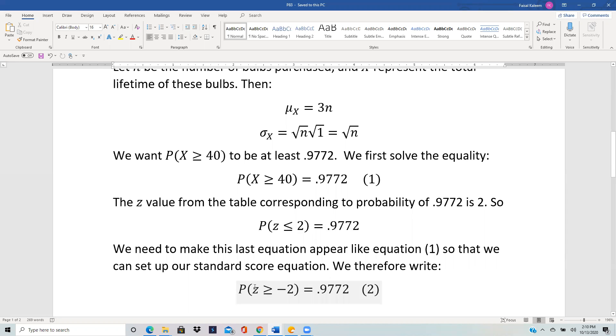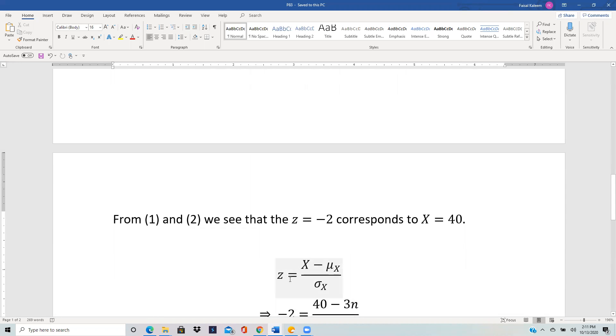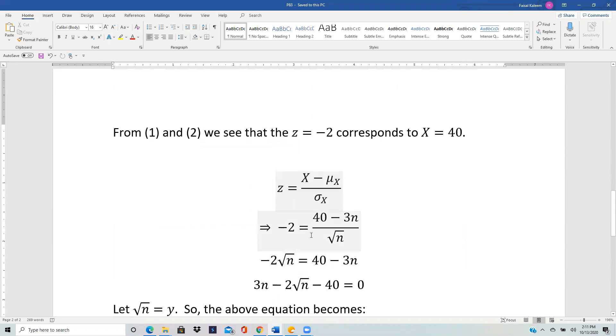From here we can spot that z = -2 corresponds to X = 40. So from this equation we know that when z is -2, X will be 40. Using the formula z = (X - μ)/σ, we get -2 = (40 - 3n)/√n.